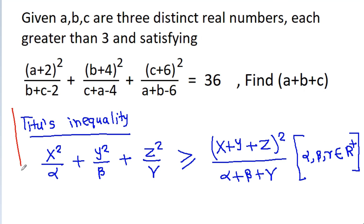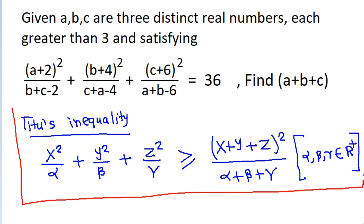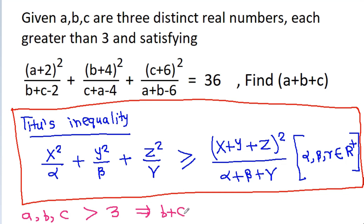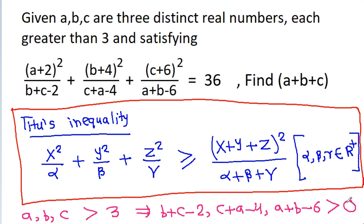We are going to use Titu's inequality in this problem. We have given that a, b, c are each greater than 3, so b+c−2 and c+a−4 and a+b−6 will each be greater than 0.